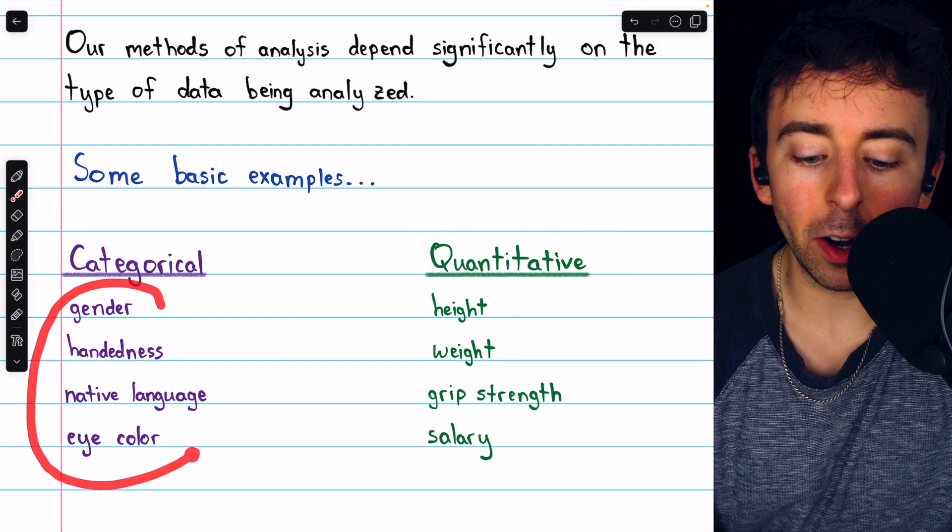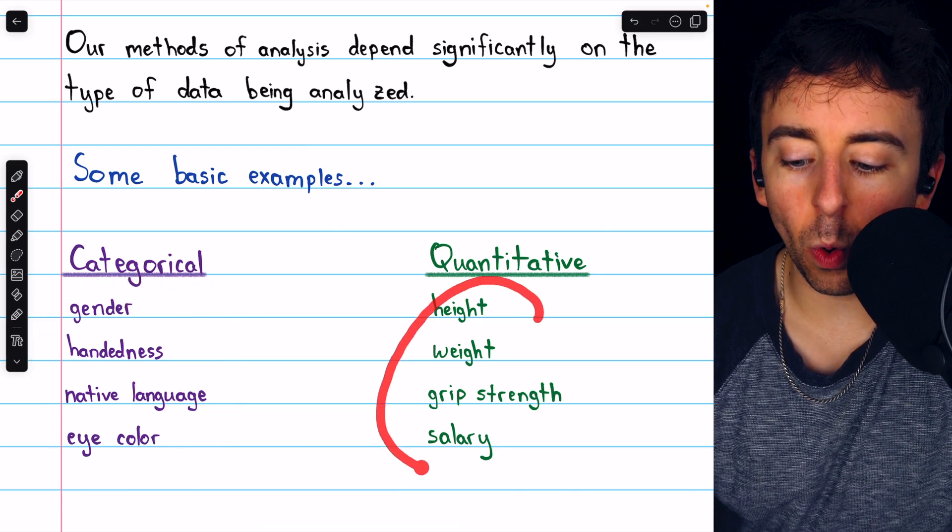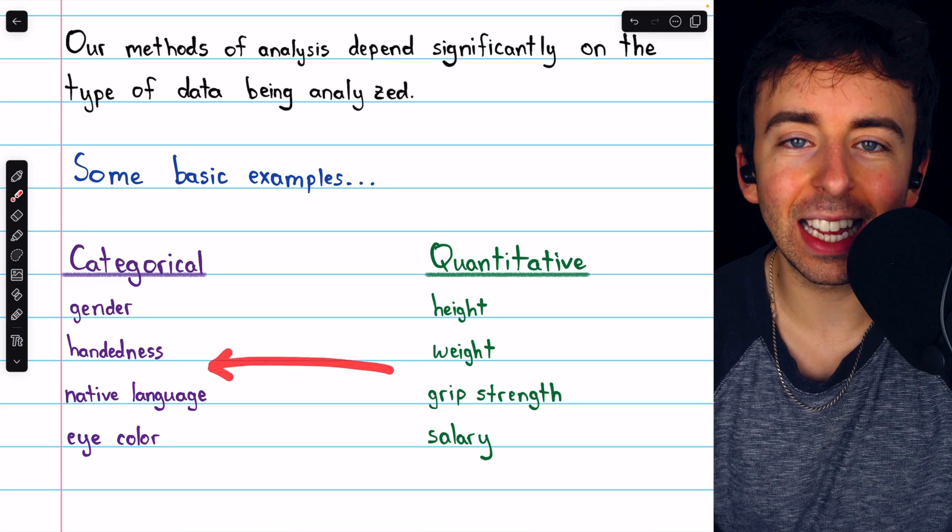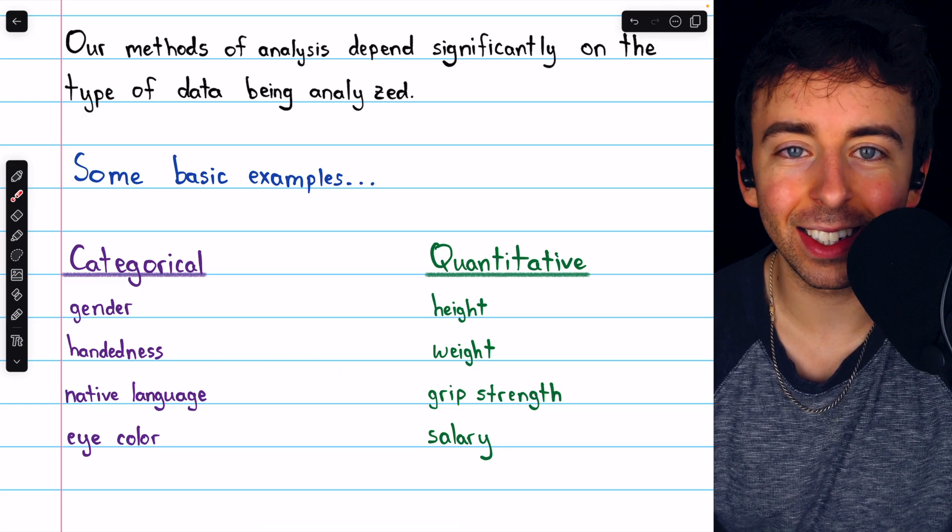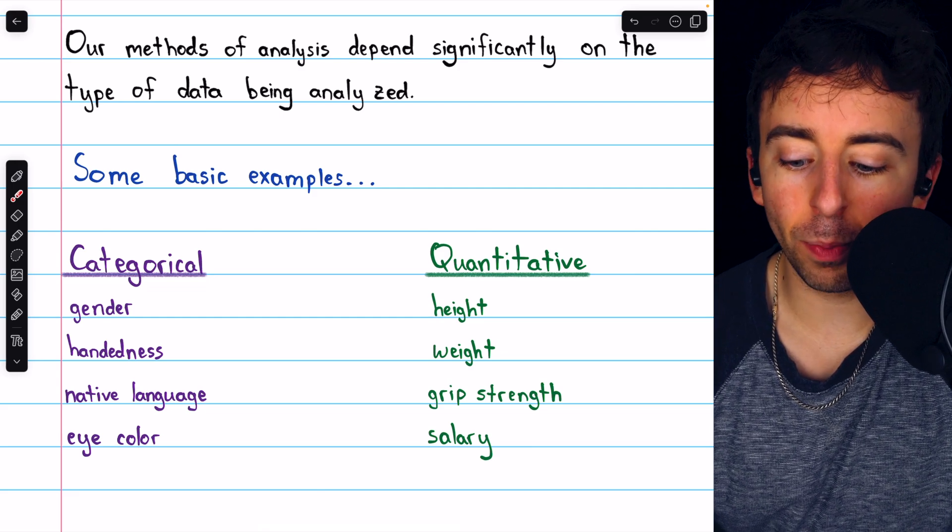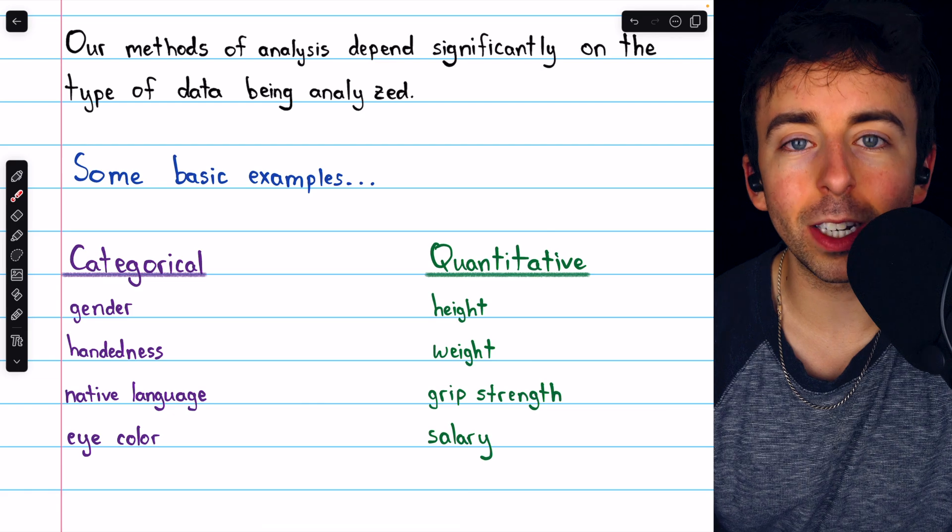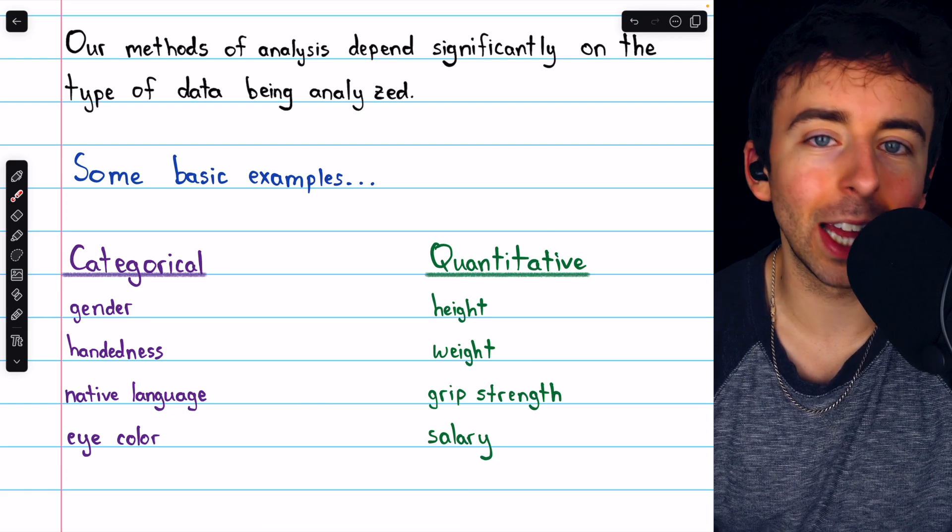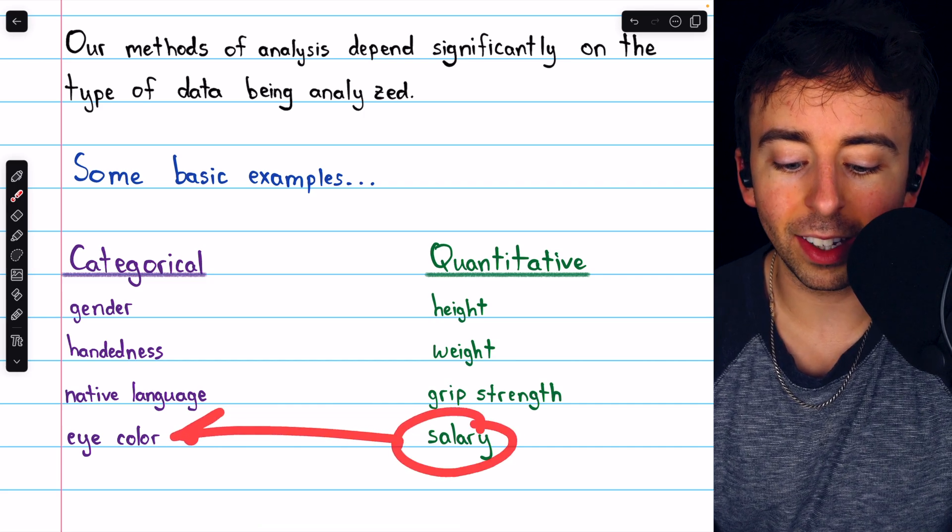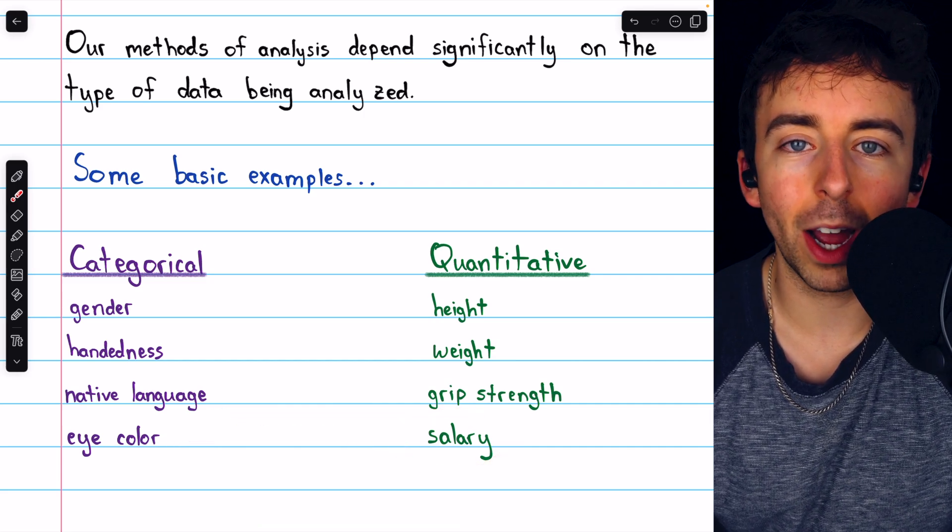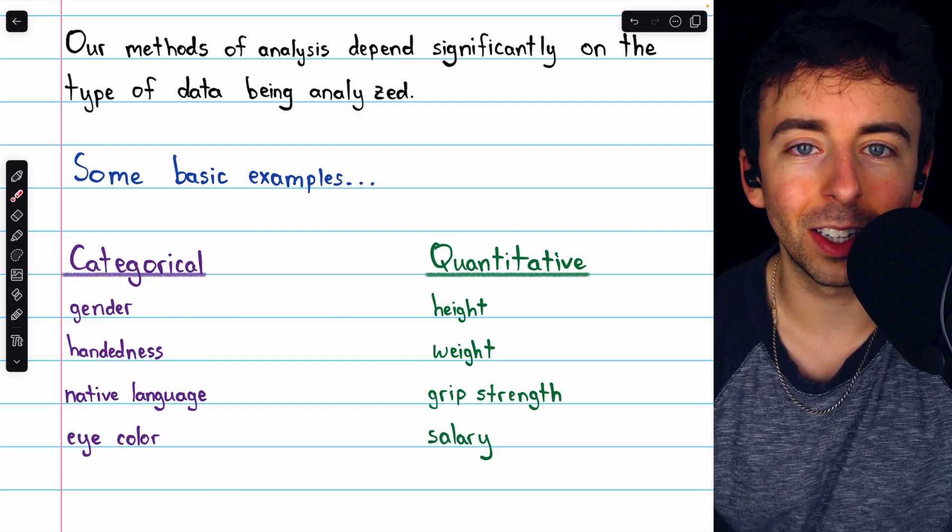And although these variables seem inherently categorical, any of these quantitative variables could make a transition to the categorical section depending on why it was being collected. For example, in combat sports, weight, of course, is specifically measured, but it's treated as a categorical variable. Are you a lightweight, a heavyweight, a middleweight, etc.? You could also imagine salary being treated as a categorical variable as we try to analyze low earners, medium earners, high earners, and so on.